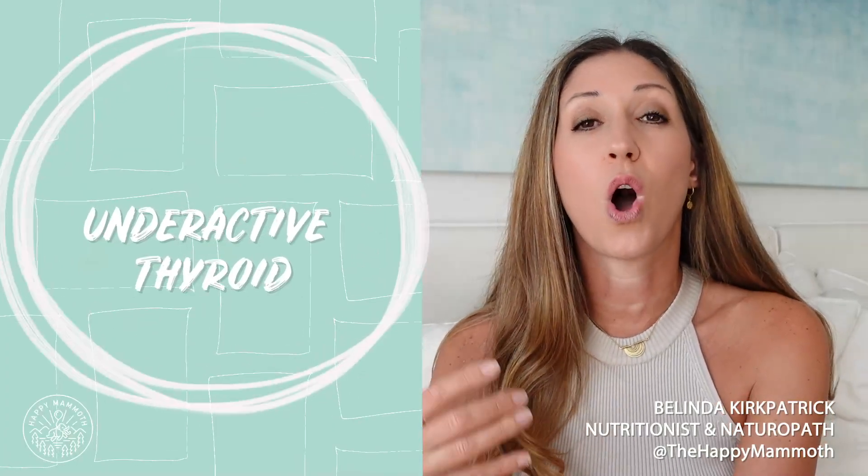If we've got not enough thyroid hormone being produced, then we can have what's called an underactive thyroid or hypothyroidism. If our thyroid hormone starts going crazy and releasing too much, then that's called hyperthyroidism — the thyroid is just going too quickly, too much kind of going on.